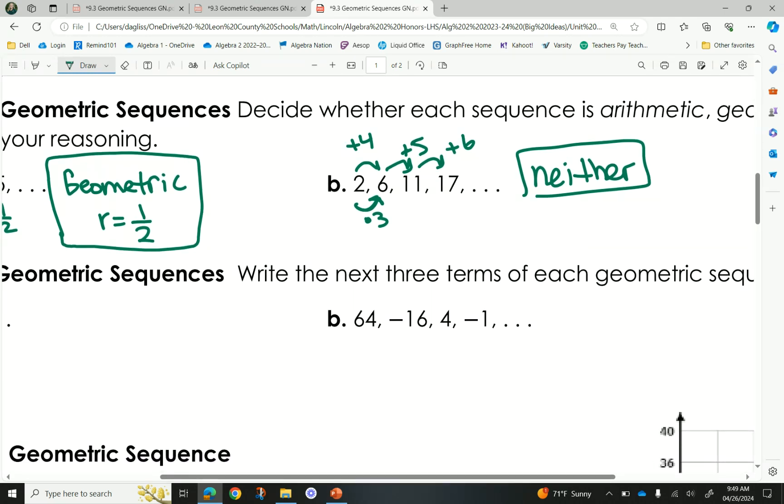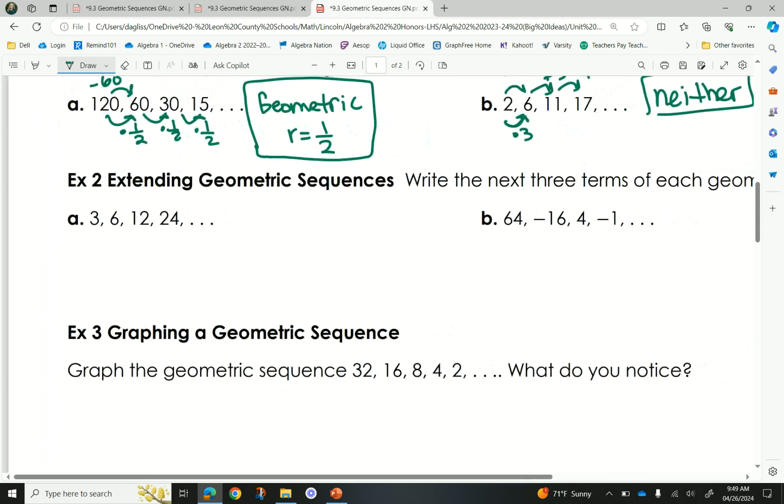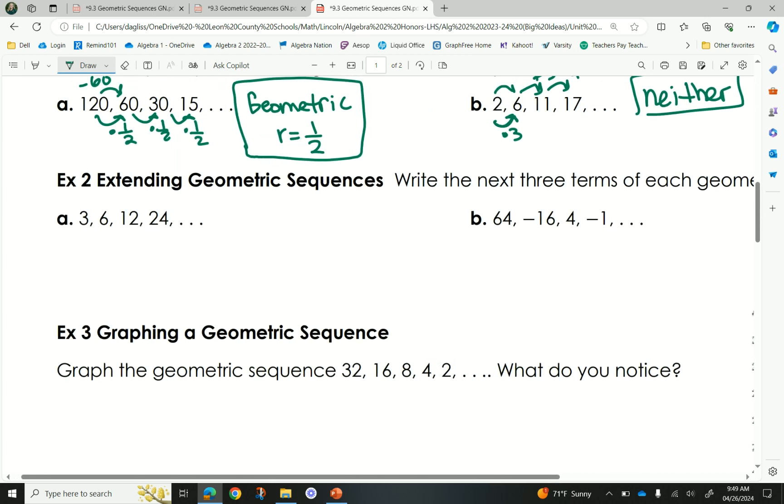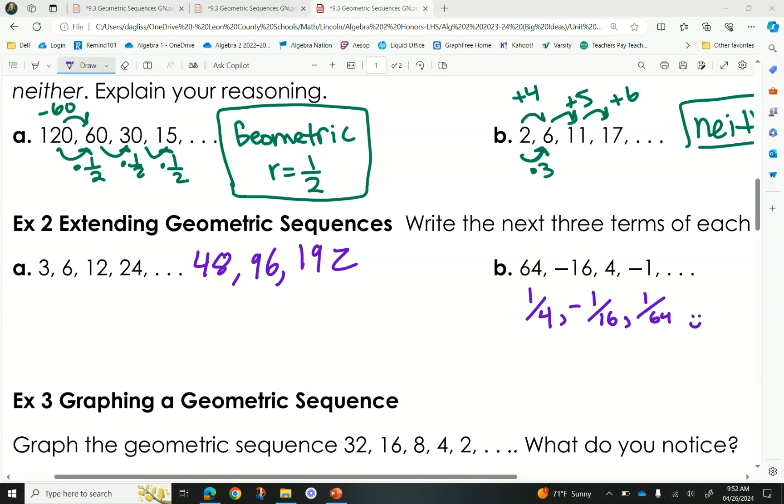So, I'm sure there's other titles that exist out there. Those are just, these are just the two that they want us to focus on. Are we good? We good? All right. Here we go. These are geometric. They told me that they are geometric. Write the next three terms. Write the next three terms. Three, six, twelve, twenty-four. And then the other one is sixty-four, negative sixteen, four, and negative one.